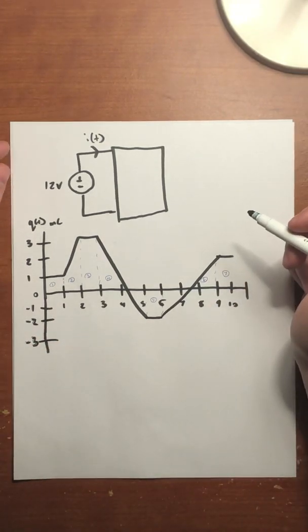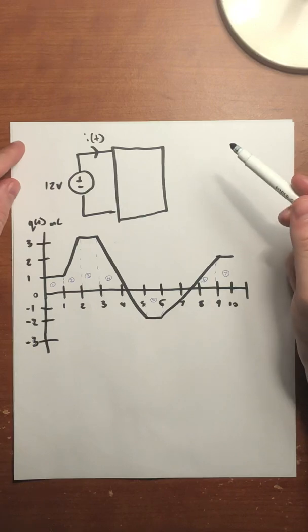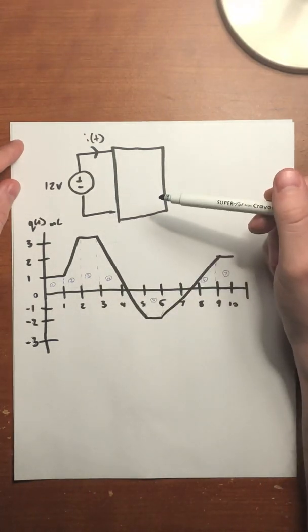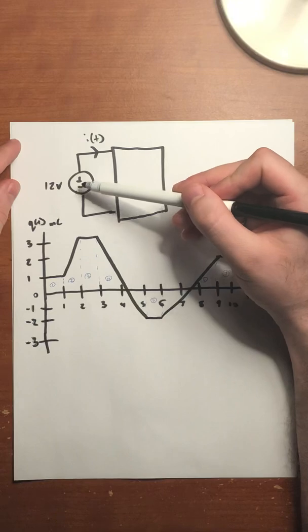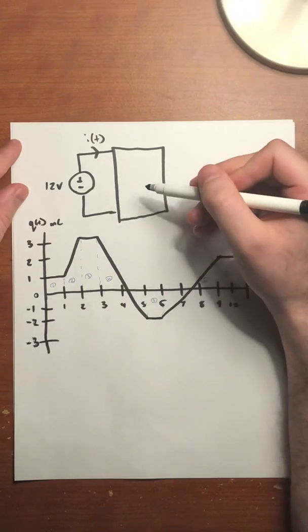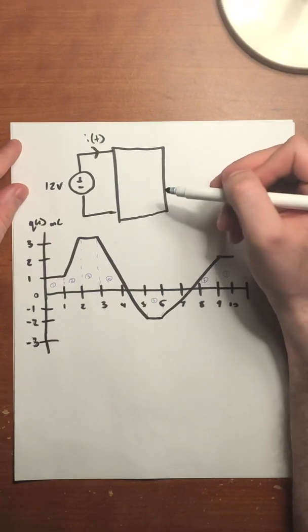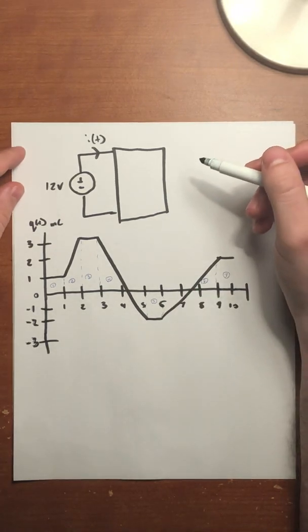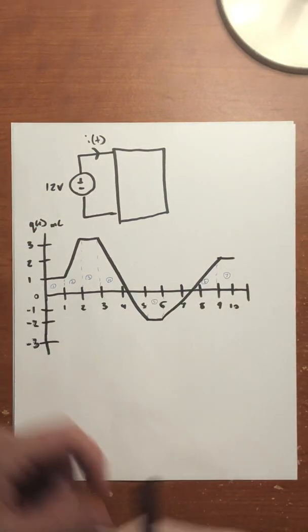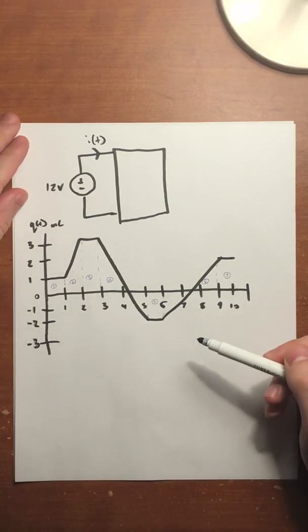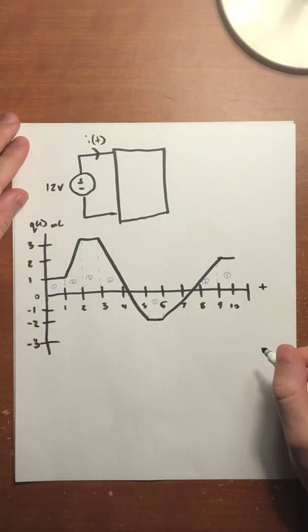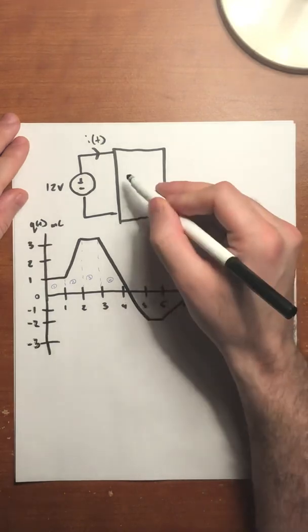Hi guys, welcome to the second problem of the channel. Today we're going to be graphing the current of a circuit. We have a 12-volt voltage supply connected to a box — we don't know what's in this box, but we can assume it contains a circuit with various elements that allows current to flow through it. On this graph, the x-axis is time and the y-axis is charge in millicoulombs flowing within this box.